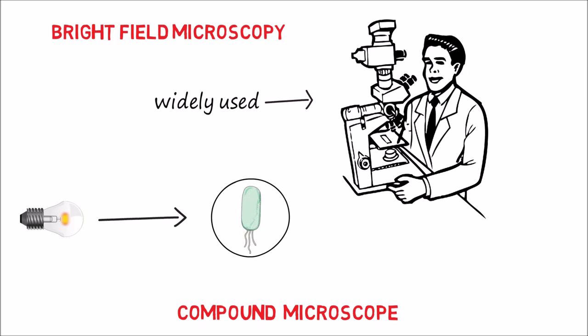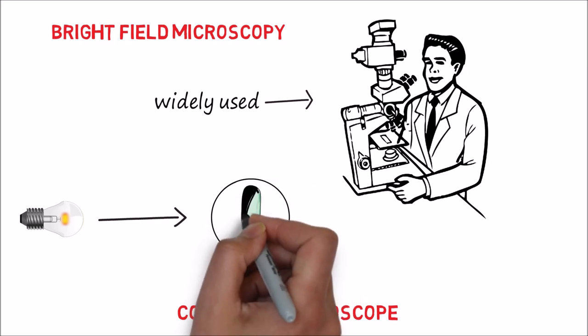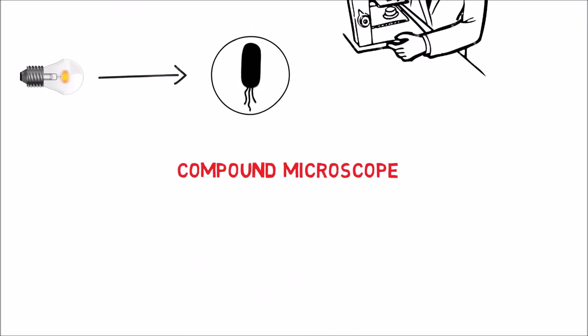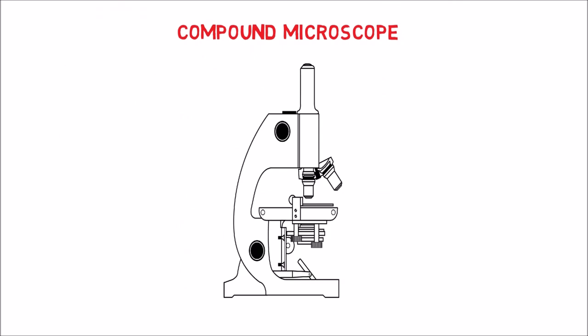Microorganisms appear dark as they absorb some light. Usually microbes do not absorb much light, but staining them with a dye greatly increases their light-absorbing ability. Now let us understand the working principle and construction of a compound microscope.